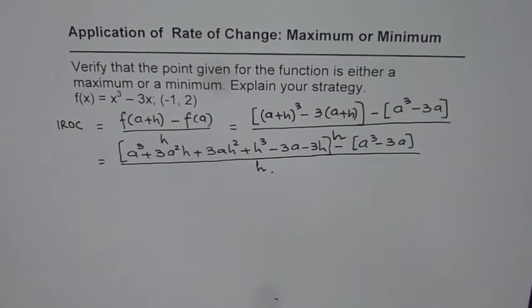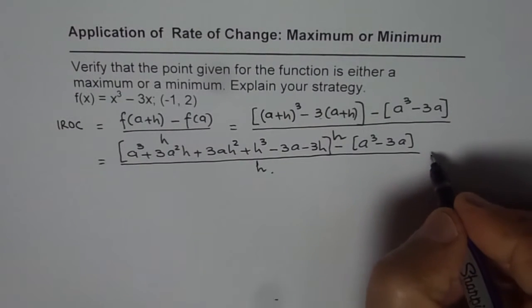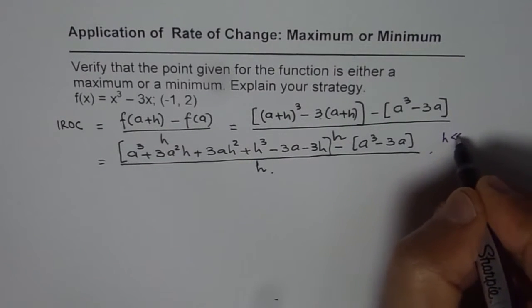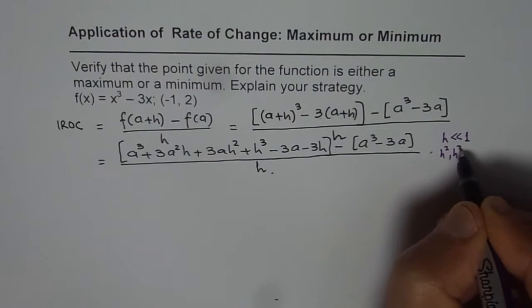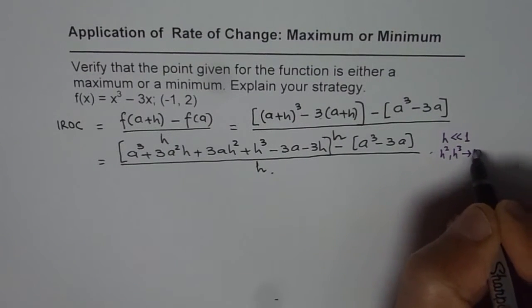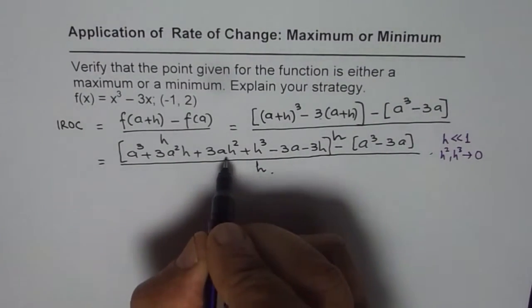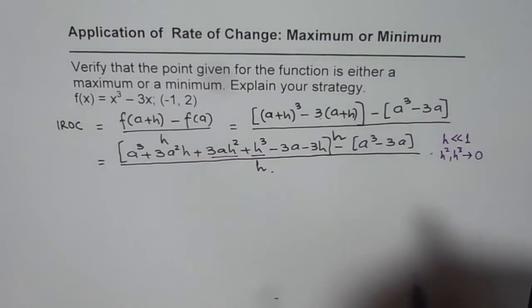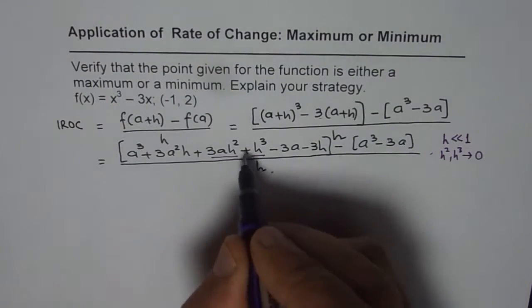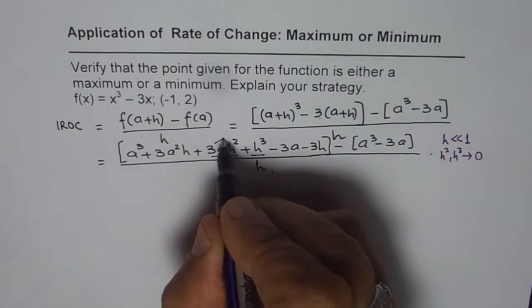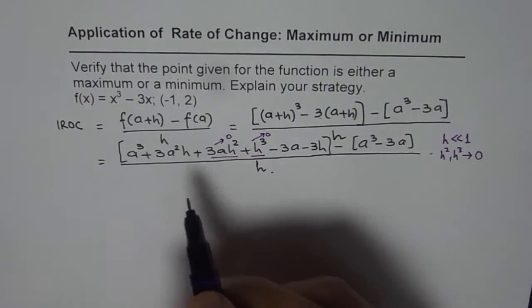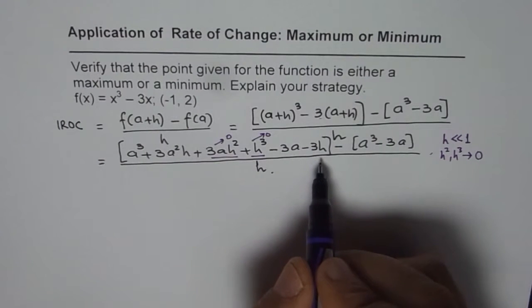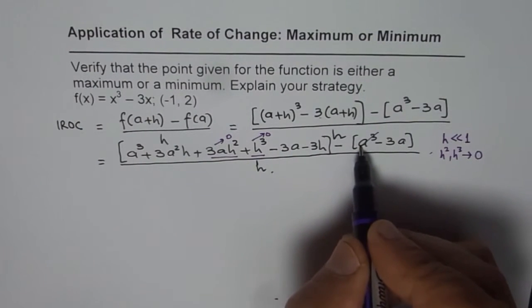Since we are trying to figure out instantaneous rate of change, we know that h is very, very small compared to 1. Therefore h² or h³ should be approaching 0, so we can neglect the terms which have h² or h³ in them — they are approximately 0. And as you may have noticed in difference quotient, certain terms cancel out.